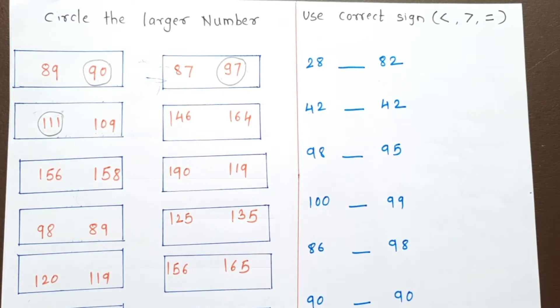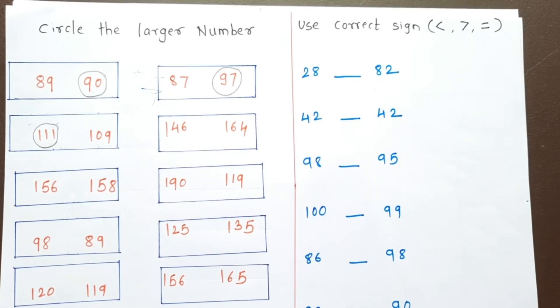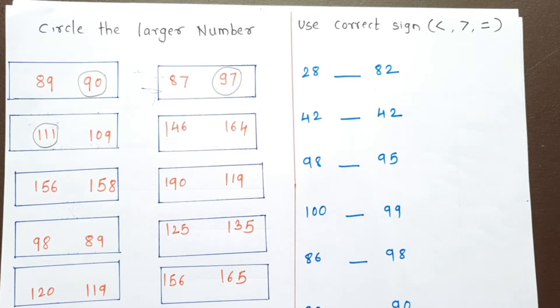Big number and small number are important concepts. Ascending and descending orders are very helpful for understanding these concepts.